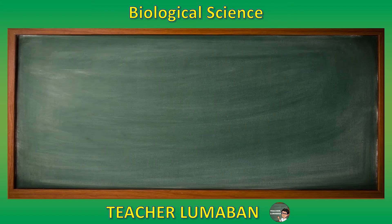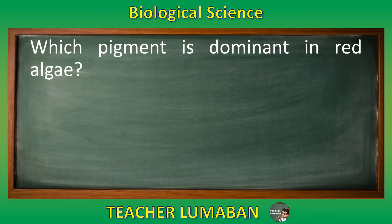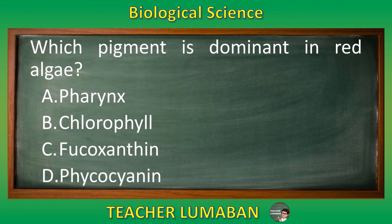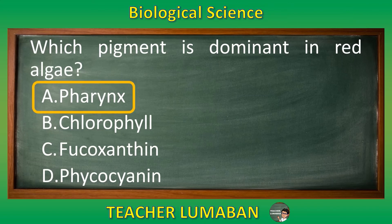Which pigment is dominant in red algae? Letter A: pharynx. Letter B: chlorophyll. Letter C: fucoxanthin. Letter D: phycocyanin. The correct answer is letter A, pharynx. The pigment that is dominant in red algae is pharynx.